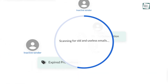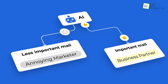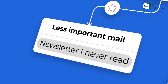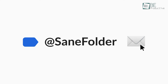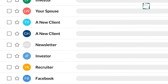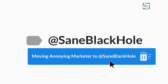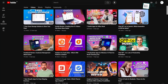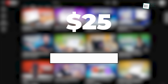Everything considered, SaneBox is an incredible email management tool that can help you declutter your inbox, save hours of time, and streamline your workflow. With its advanced AI algorithms, customizable features, and cross-platform compatibility, this tool provides a unique and personalized email experience that adapts to your communication patterns and preferences. We recommend SaneBox to anyone looking to take control of their email and boost their productivity.